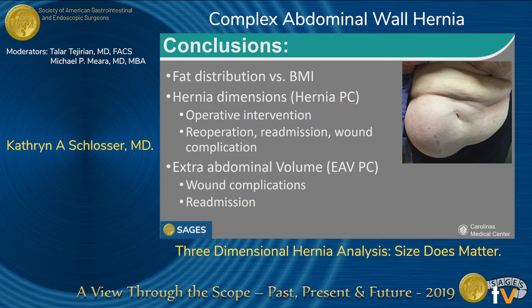Subcutaneous fat and BMI do impact outcomes to a lesser degree, including in association with wound complication and re-admission. This is a more nuanced and more accurate description of patient adiposity, as a specific location and distribution of fat in the obese patient will differently impact outcomes after open ventral hernia repair.